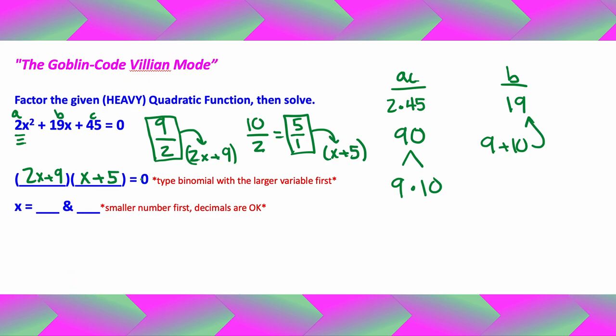Part 2, I need to solve each of those binomials for x. So here we go. Let's solve one of them right here. Let's do 2x plus 9 equals 0 and then we're going to do x plus 5 also equals 0.